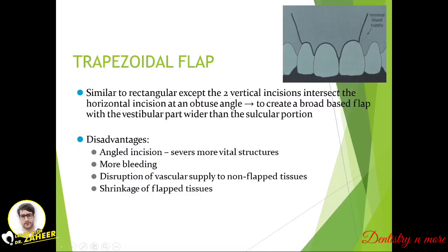The trapezoidal flap is almost similar to the rectangular flap except the two vertical incisions intersect the horizontal incision at an obtuse angle, creating a broad-based flap with the vestibular part wider than the coronal part. The vertical incisions angle outward rather than going straight, creating the obtuse angle. Disadvantages include angled incision, risk to vital structures, chances of bleeding, disruption of vascular supply to non-flapped tissues, and shrinkage of flap tissues.